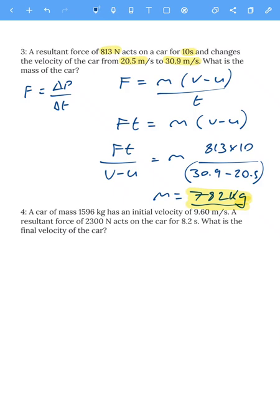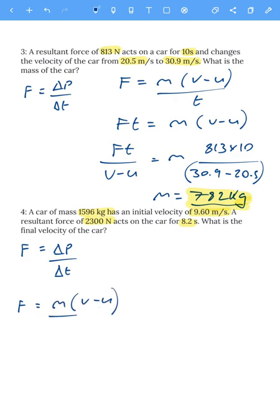Let's look at one more. A car of mass 1596 kilograms has an initial velocity of 9.6 meters per second. A force of 2300 newtons acts on the car for 8.2 seconds. We want the final velocity. Force equals change in momentum divided by change in time, so we use F = M times V minus U over time. Doing force times time divided by mass gives us the change in velocity, V minus U.